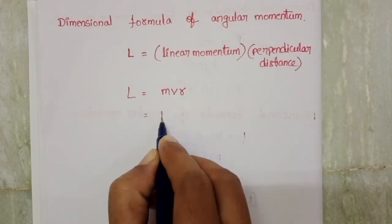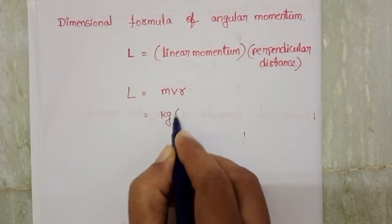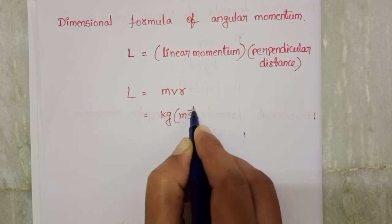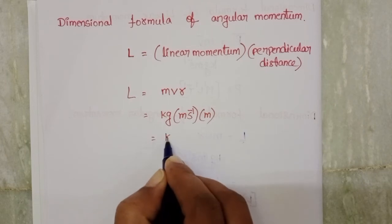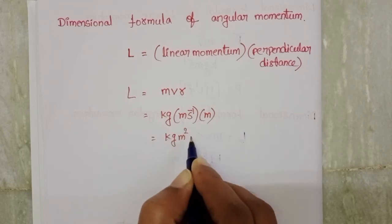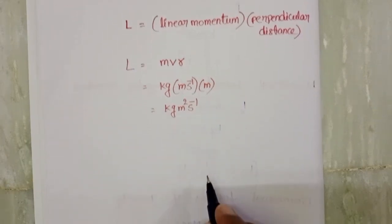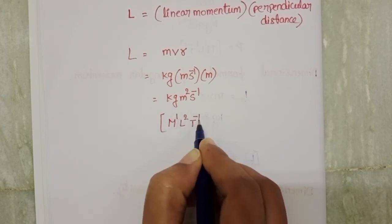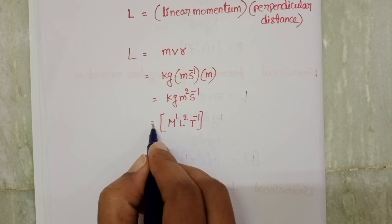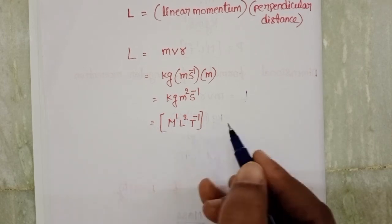The SI unit of mass is kg, velocity is meter per second, and radius or perpendicular distance is meter. So kg·meter square·s power minus 1, giving M power 1, L power 2, T power minus 1. This is the dimensional formula of angular momentum.